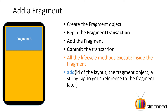The add method takes three parameters: one, the ID of the layout inside which you want to add the fragment — for example a RelativeLayout or LinearLayout with an ID; two, the fragment object; and three, a string tag to get a reference to the fragment later. This string tag is just like giving a name to the fragment, and you can retrieve it using that name. We'll see how this is done in the next video on Android Studio.